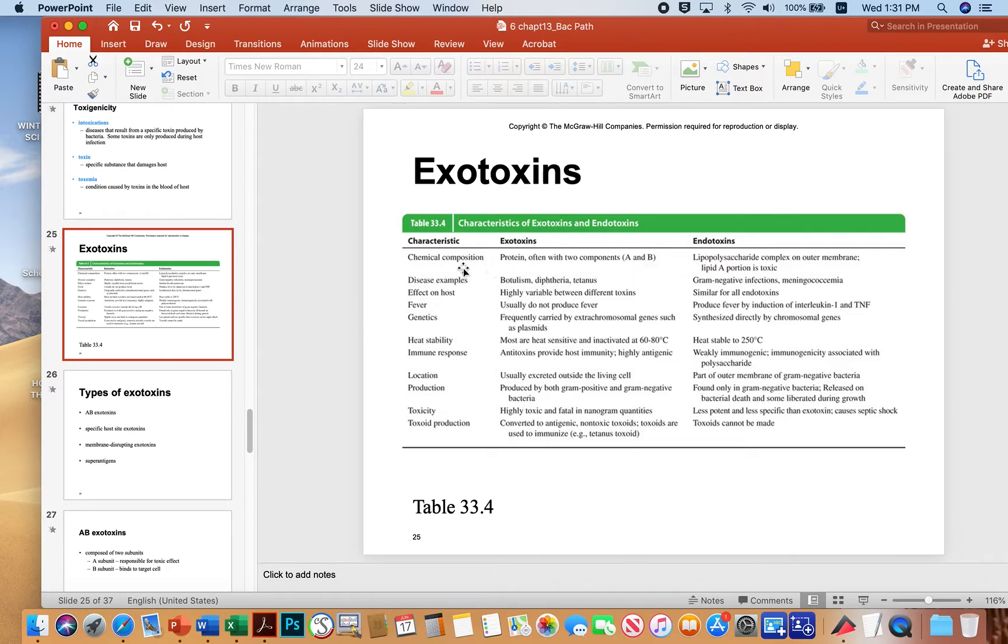So in terms of chemical composition, exotoxins are proteins, whereas endotoxins are lipopolysaccharides that exist in the outer membrane of gram-negative bacteria.